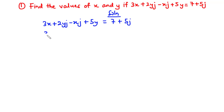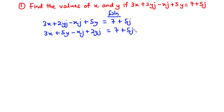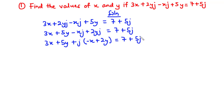For the real parts, we have 3x + 5y. For the imaginary parts — those with j attached — we have -xj + 2yj, and that equals 7 + 5j. Factoring out j gives us: 3x + 5y + j(-x + 2y) = 7 + 5j. Comparing coefficients of real and imaginary parts gives equation 1: 3x + 5y = 7.